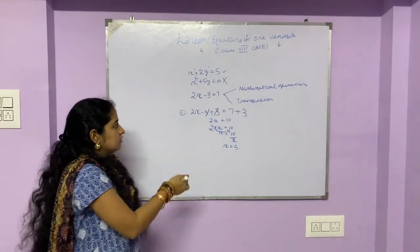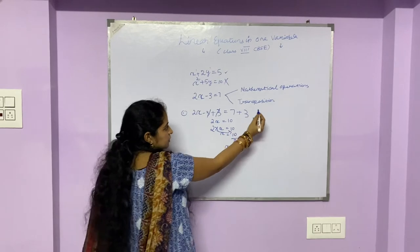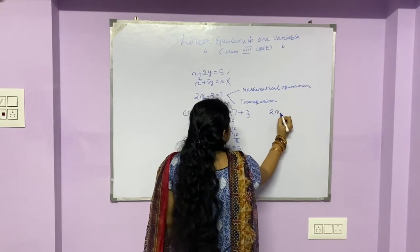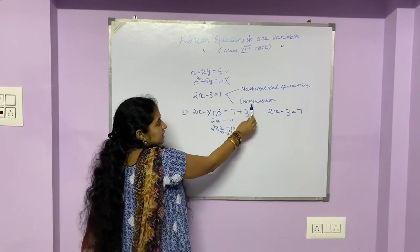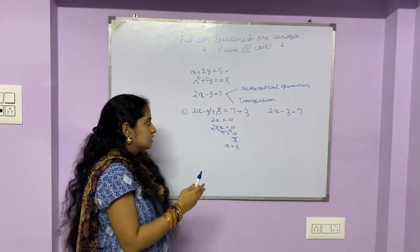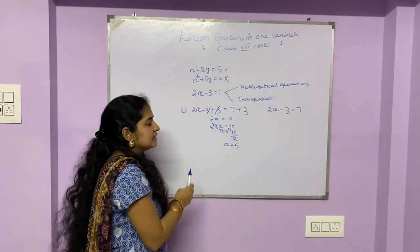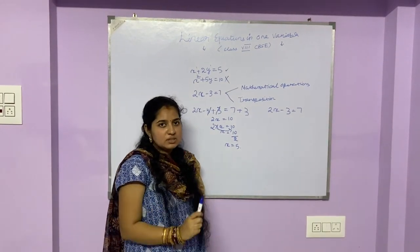This is the first method. We will solve the same equation by the transposition method. As the name suggests, transposition, you need to transpose one constant or variable to the other side. And like I said previously, whenever you are transposing, your sign also changes.